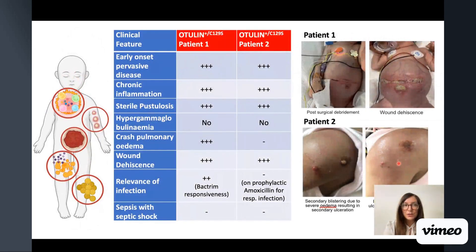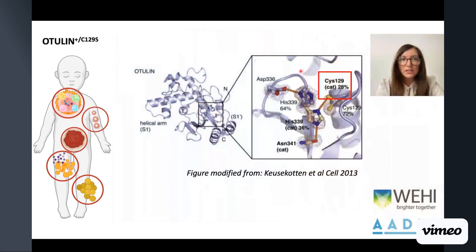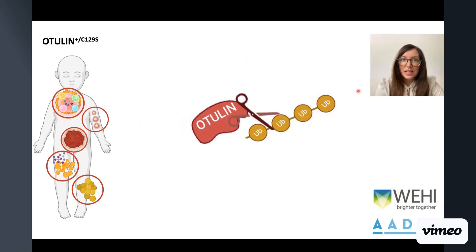This story starts with two patients who presented with a series of inflammatory symptoms, including severe necrotizing wounds which failed to heal. Genetic testing revealed that both patients had a heterozygous de novo variant in the gene otulin, resulting in a missense change from a cysteine to a serine at position 129. We thought this was likely a disease-causing variant because otulin is one of only two deubiquitinases in the cell able to cleave linear ubiquitin chains.